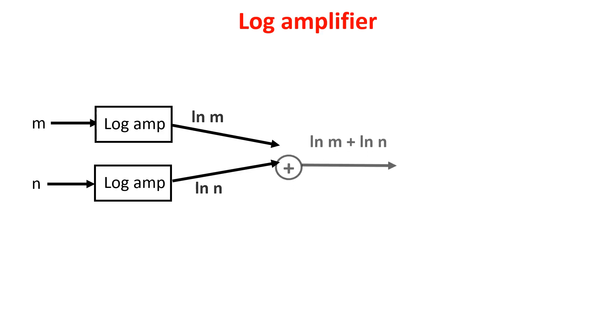Second, we add the two numbers and here we exploit the log property because this is equal to the log of m times n. Third, we calculate the anti-log to get the product of the initial numbers.